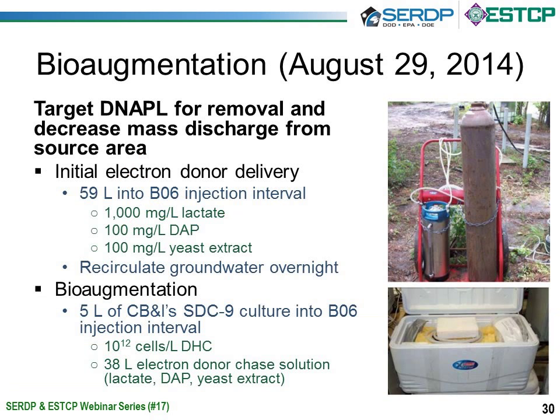After completing this characterization work, we initiated our bioaugmentation about a year ago at Edwards Air Force Base. We did this during recirculation, first putting in our remedial amendments — lactate, diammonium phosphate, and yeast extract as nutrients. We bioaugmented using CB&I's SDC9 culture, adding about 5 × 10¹² cells per liter, then continued pulsing in lactate and nutrients during several months of active remediation.